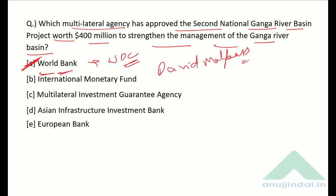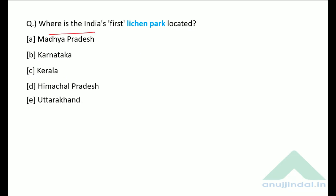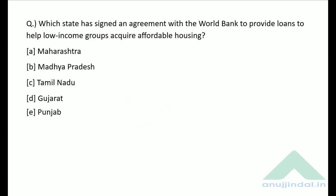Where is India's first lichen park located? India's first lichen park was recently announced and it is located in Uttarakhand — option E. The Chief Minister of Uttarakhand is Trivendra Singh Rawat.